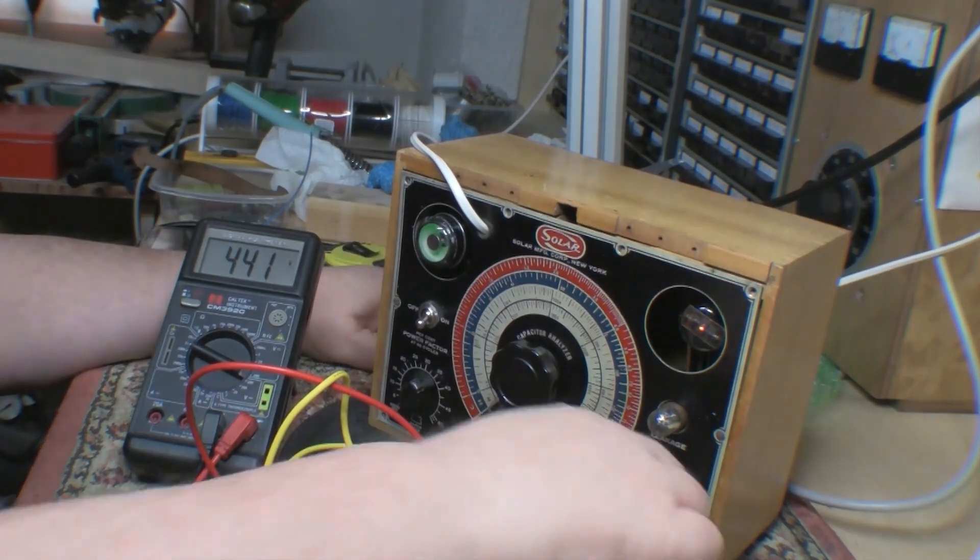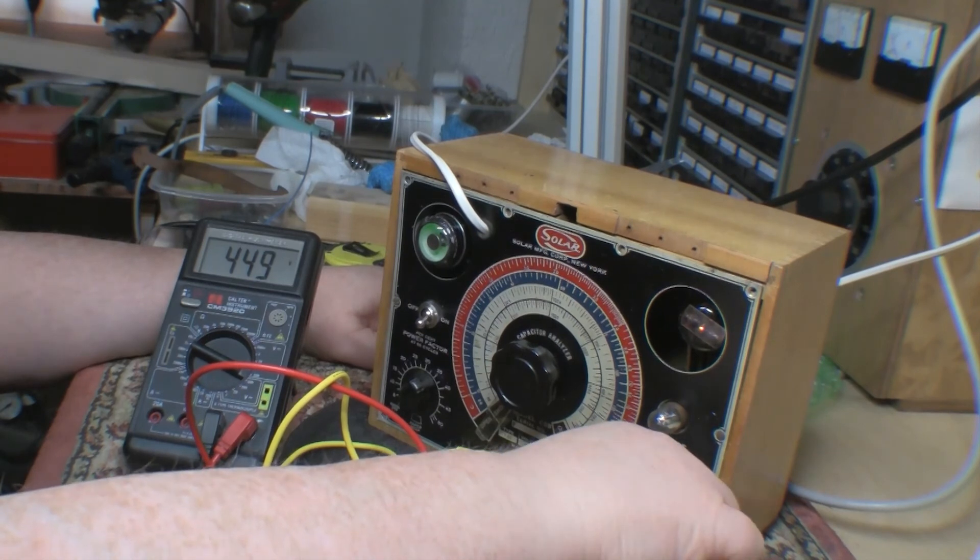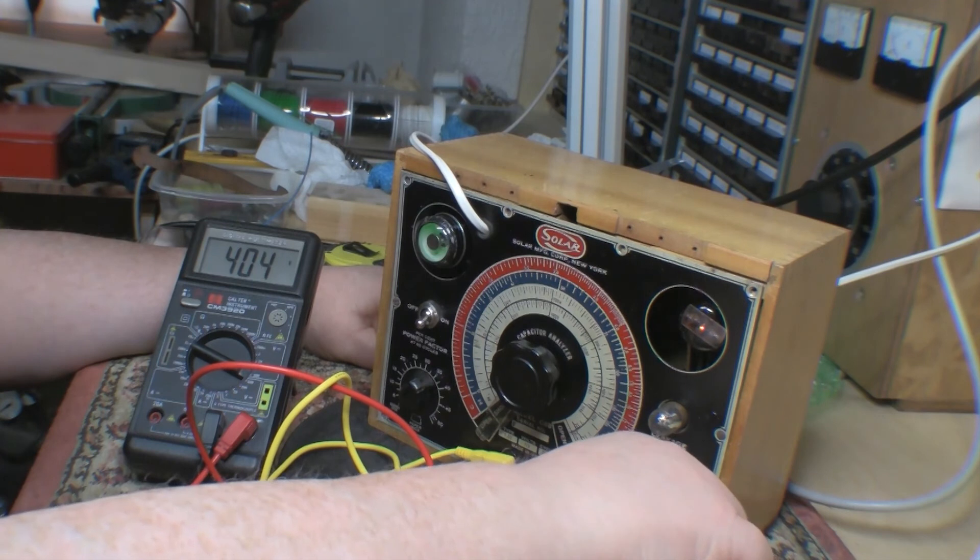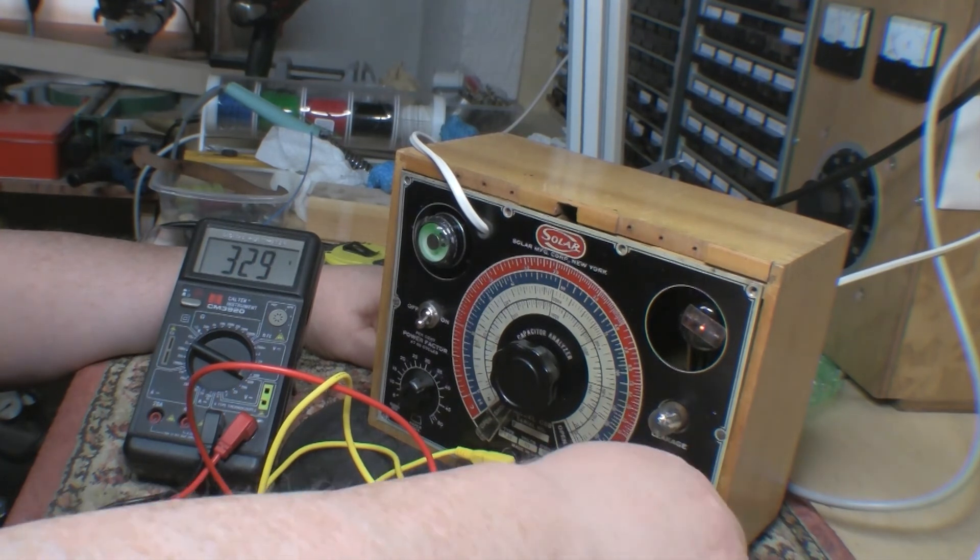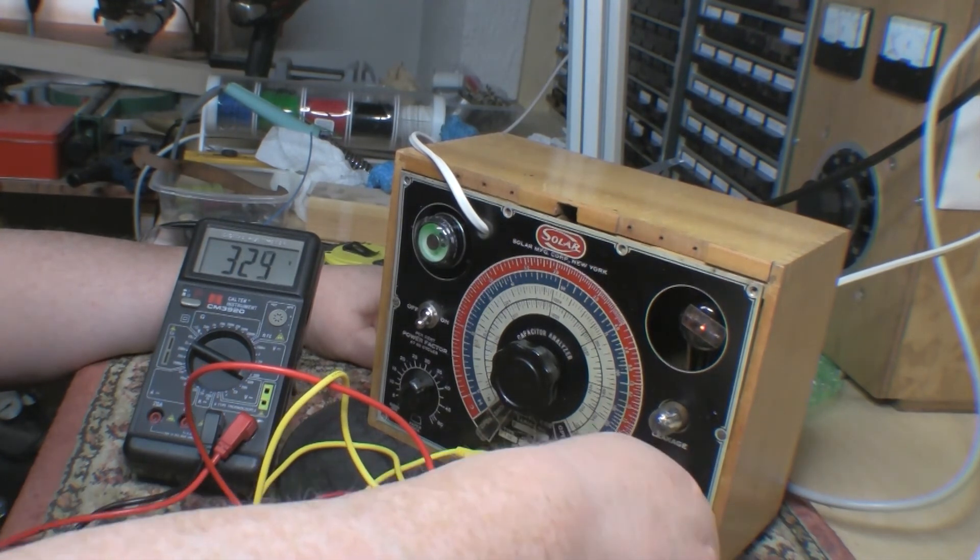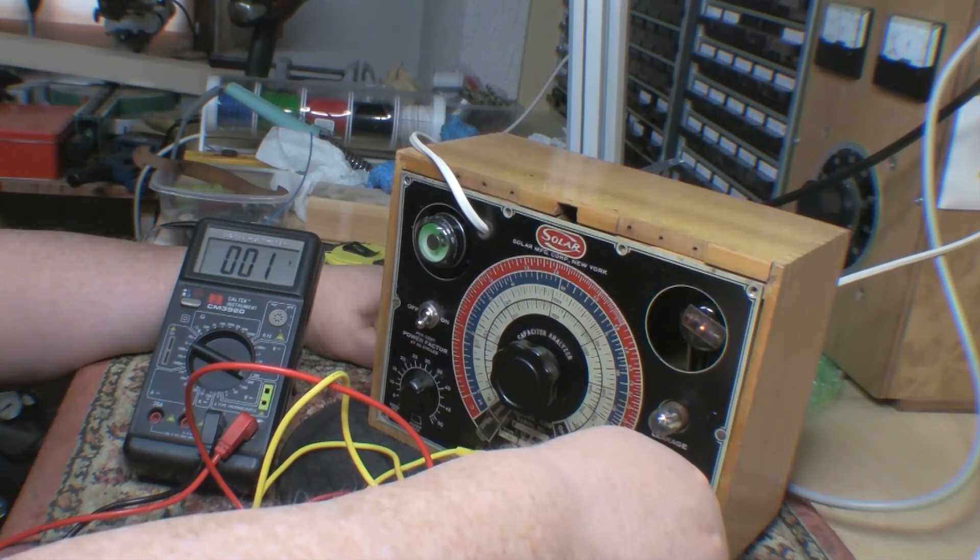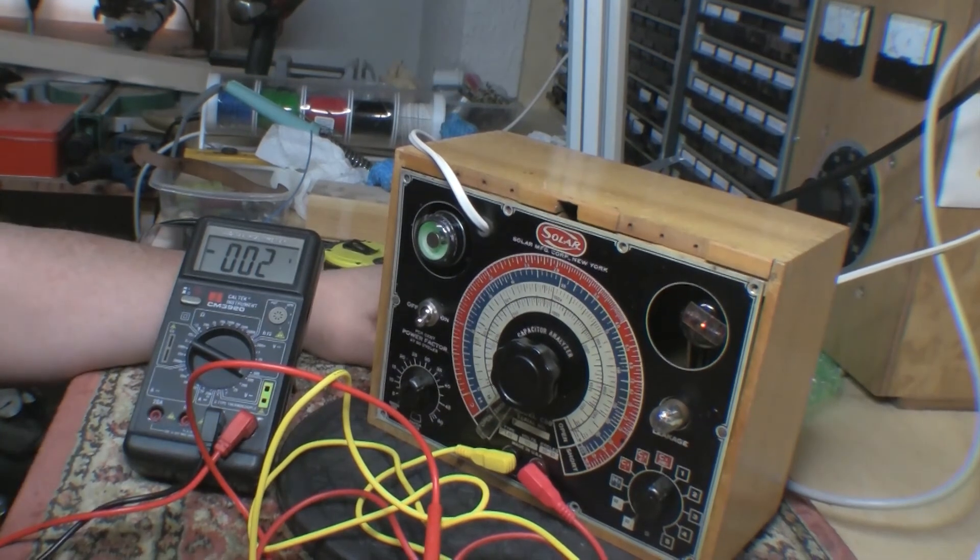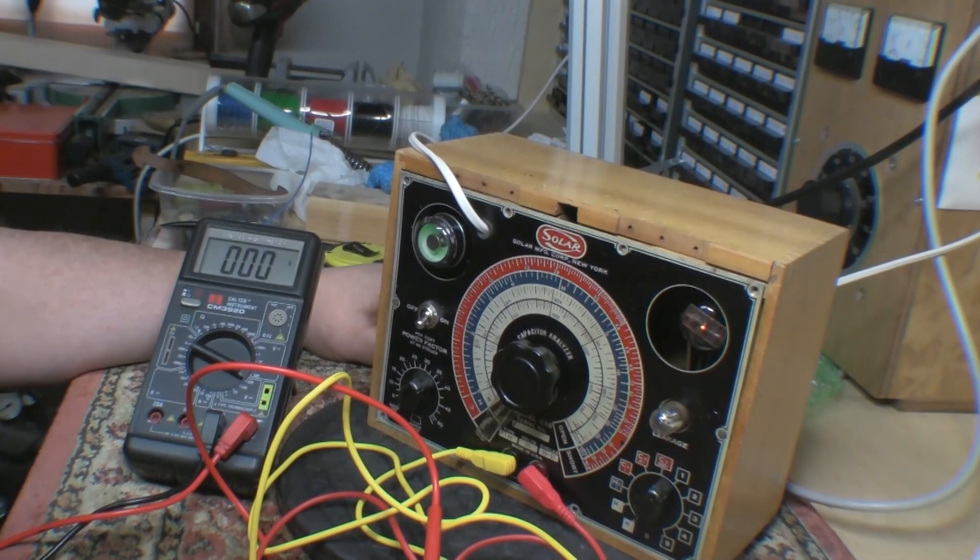I want to assume that you get 0 volts then. So if I go to C times 0.001. Okay, now we're starting to drain. Okay, and if you go to position R1 or R2, it drains away.